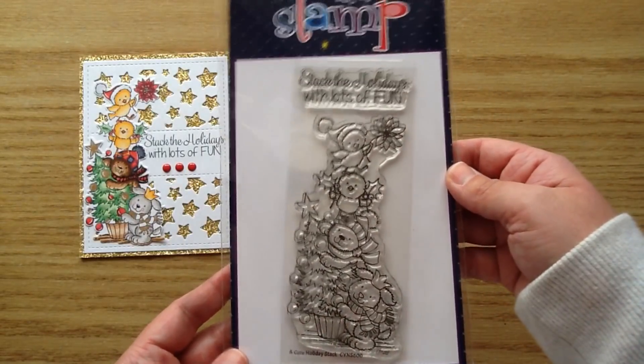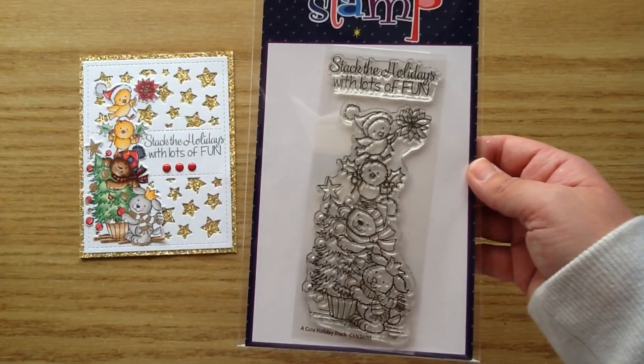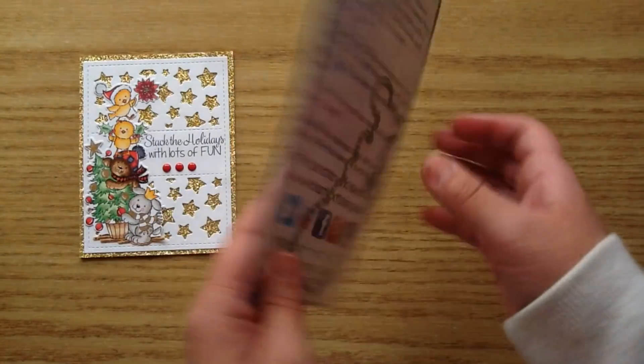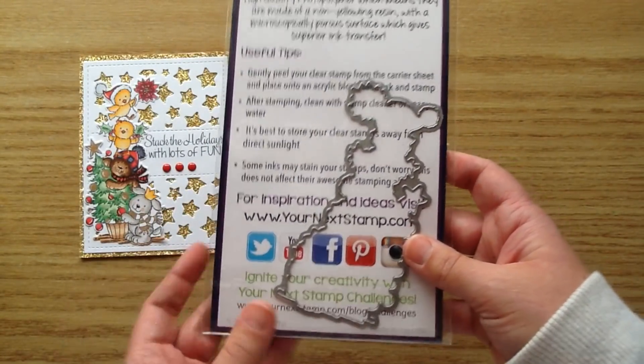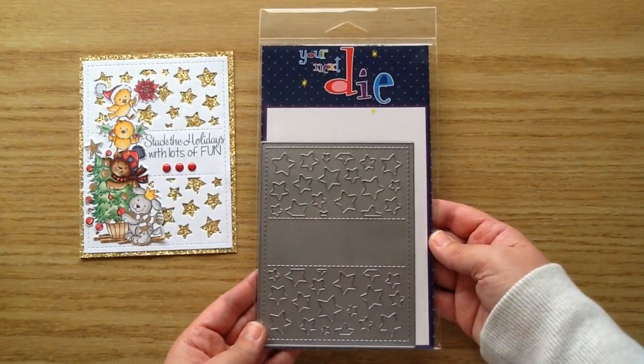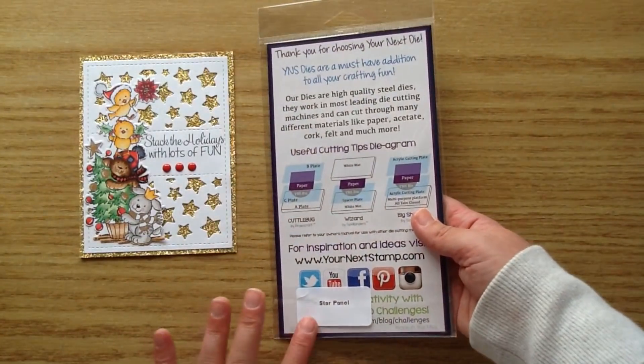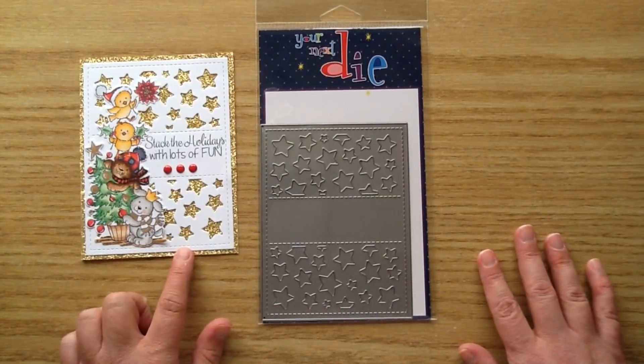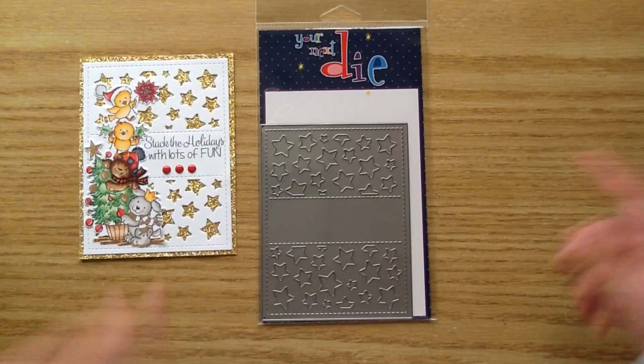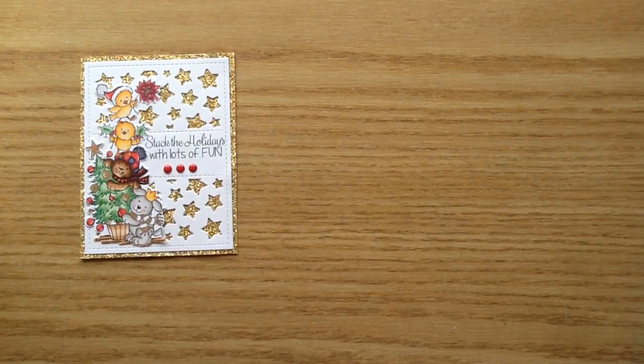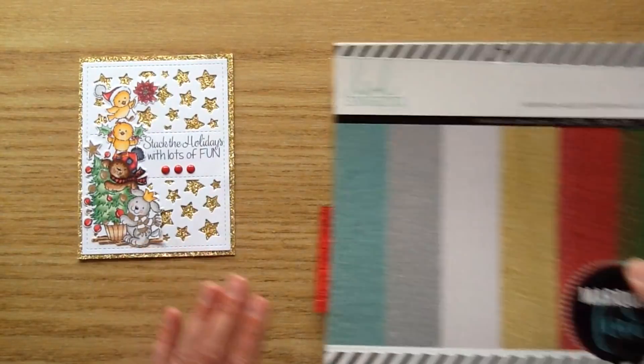I used this adorable stamp set here. It's called a cute holiday stack and it is such a cute stack of little critters and they are putting ornaments on the Christmas trees and they've got a whole bunch of cute Christmas items in their hands. And then there is also a coordinating die that you can purchase separate to cut it out. I used this really cool back panel. This is the star panel and you basically just cut this out and you put it on your card and you have a complete background for your images. And then it also has the little spot with the stitching kind of outlining it where you can put the sentiment.